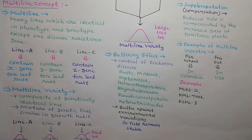Examples of multiline varieties include MLKS-11, KML-7406, and KSML-3.